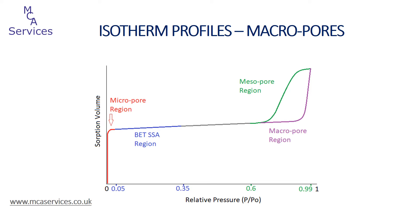This imposes a maximum pore size limit to which the isotherm can be used to resolve the pore size distribution. This is often poorly defined and rather dependent on the shape of the isotherm and, more importantly, the highest measured relative pressure for our choice of adsorbate and analysis temperature. For nitrogen at liquid nitrogen temperatures, the limit is typically around 200 nanometers.